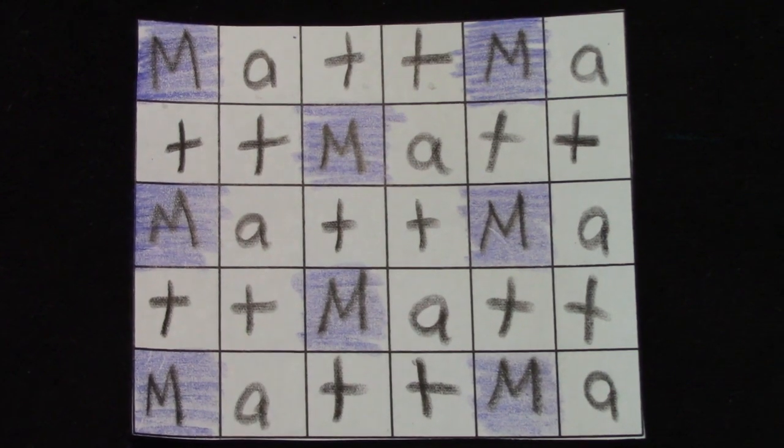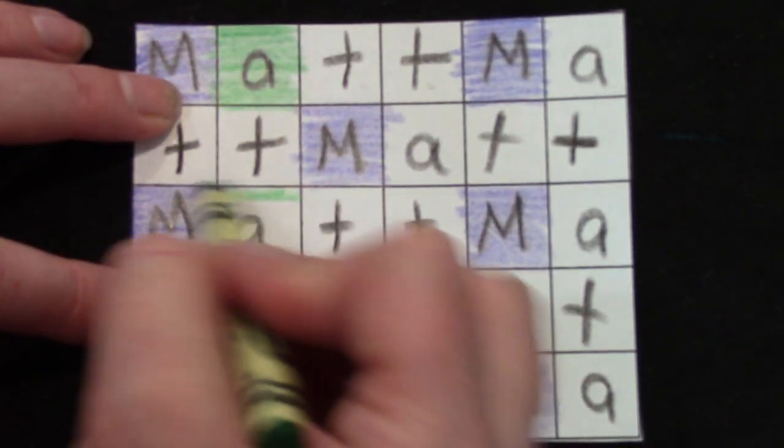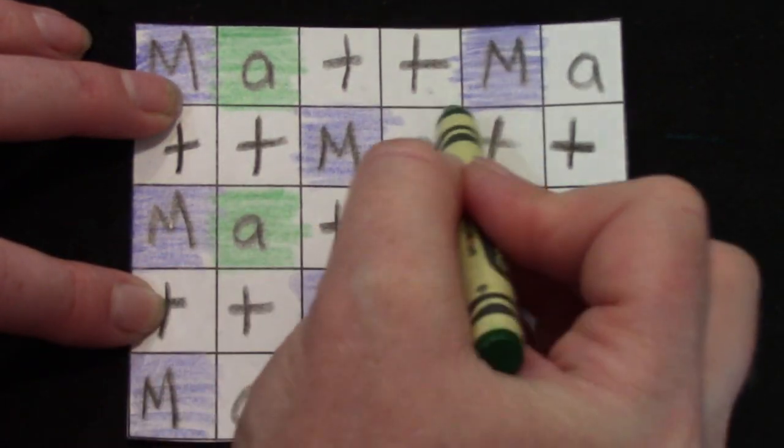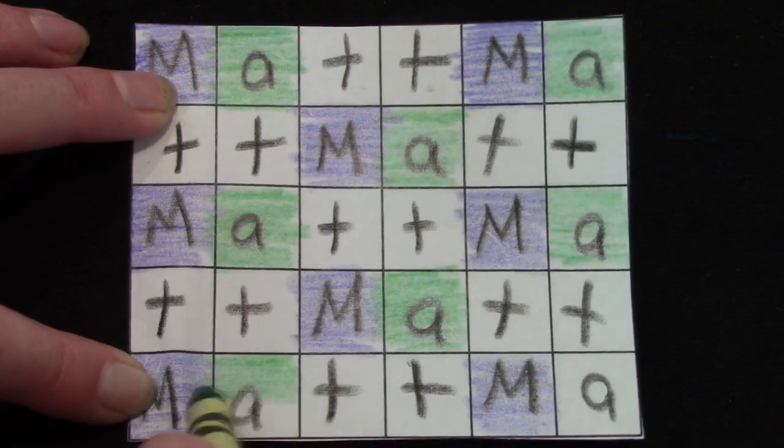Now I am going to make all of the A's green. By making all the A's green, we are going to start to see a pattern. Just one more.